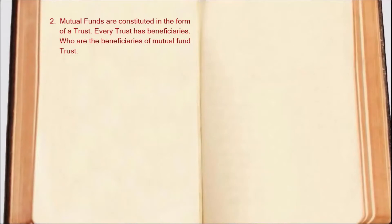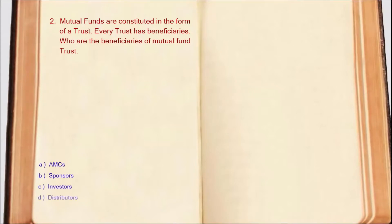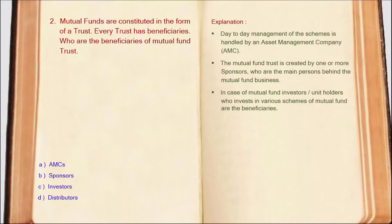Next question: Mutual funds are constituted in the form of a trust. Every trust has beneficiaries — who are the beneficiaries of a mutual fund trust? Sponsors establish the mutual fund trust; they are the main persons behind the mutual fund business. AMC handles the day-to-day management of the mutual fund. Investors who invest in mutual fund schemes are the beneficiaries of the mutual fund trust. So the answer is Option C: Investors.